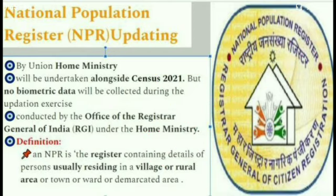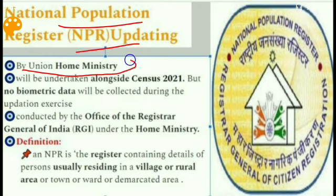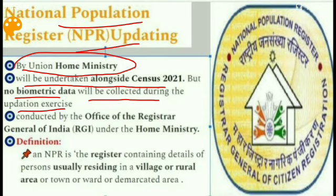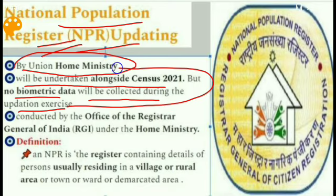The NPR updating will be undertaken by the Union Home Ministry alongside Census 2021, but no biometric data will be collected during the updation exercise. A question arises: can state governments like West Bengal and Kerala stop this? No, because registering citizens is a central act and no state government has the power to stop it — state governments must provide manpower resources and cannot deny.